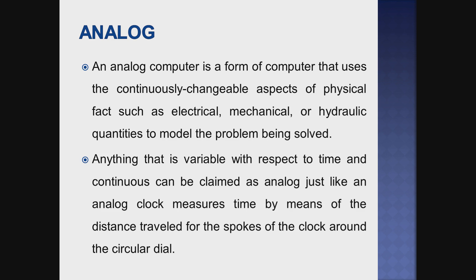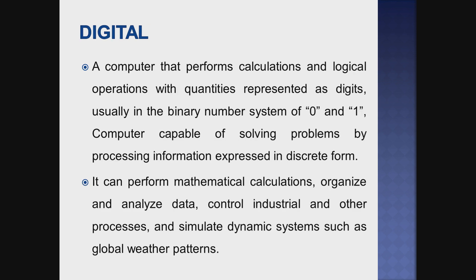That is the mechanism of an analog computer — it uses continuous variable values. A digital computer performs calculations and logical operations with quantities represented as digits, usually in the binary number system of zeros and ones. It is capable of solving problems by processing information expressed in discrete form, performing mathematical calculations, organizing and analyzing data, controlling industrial processes, and simulating dynamic systems such as global weather patterns.